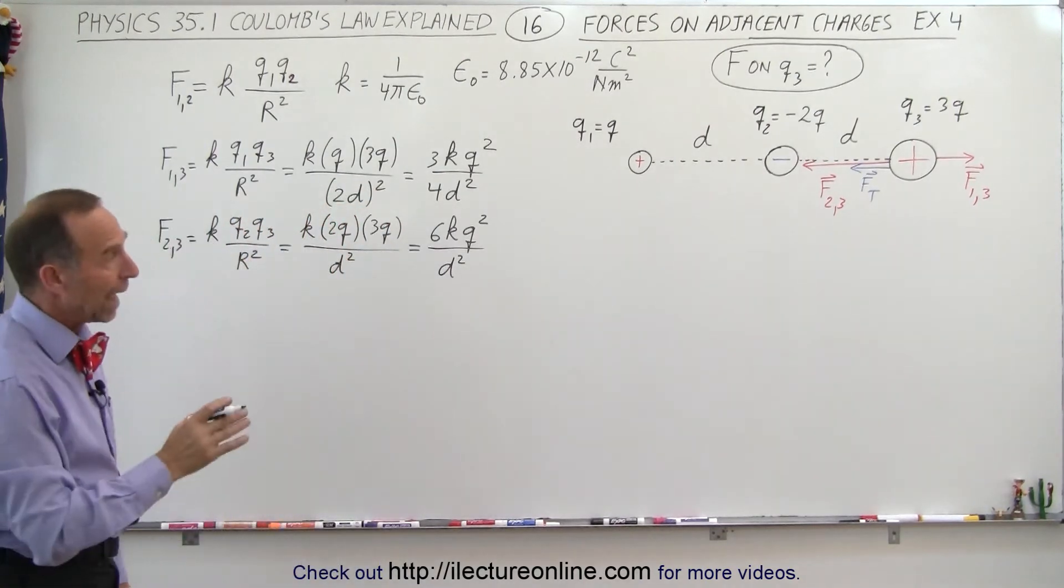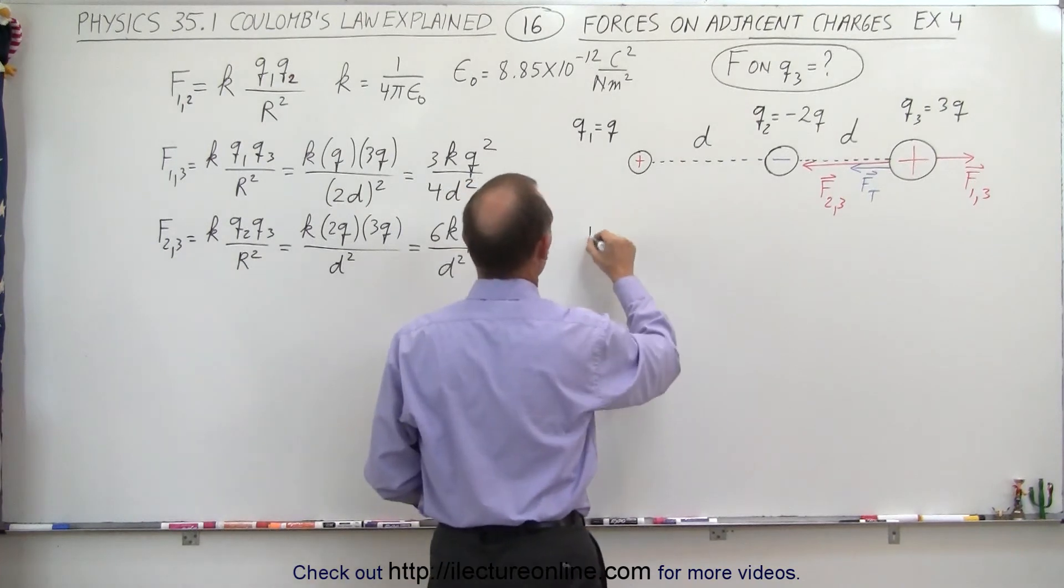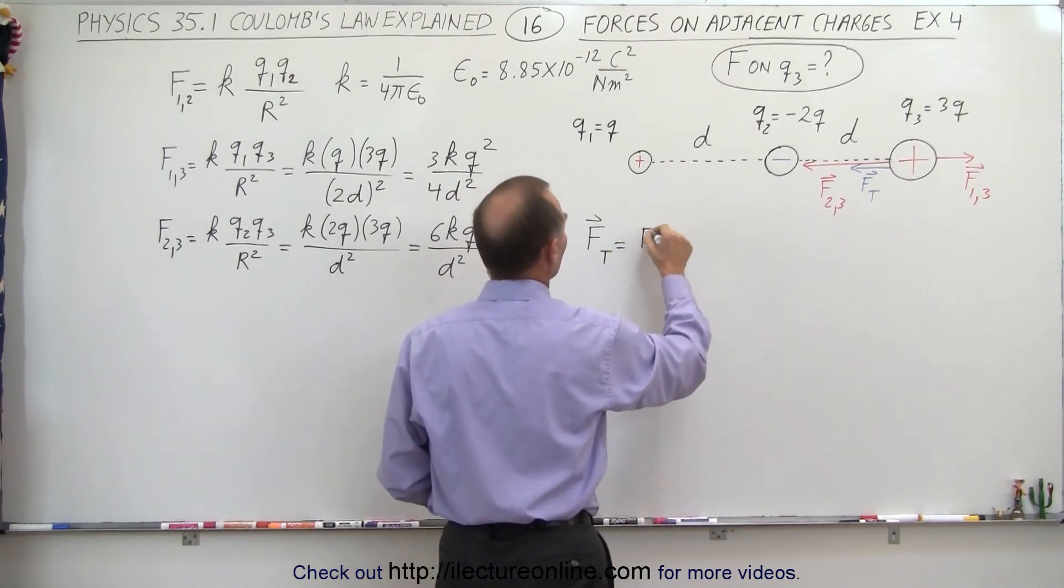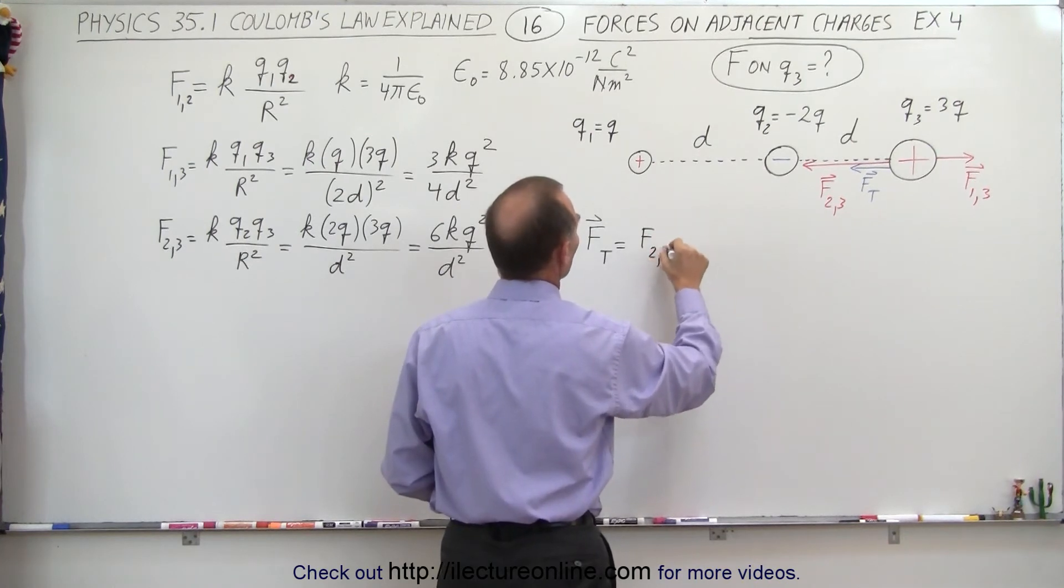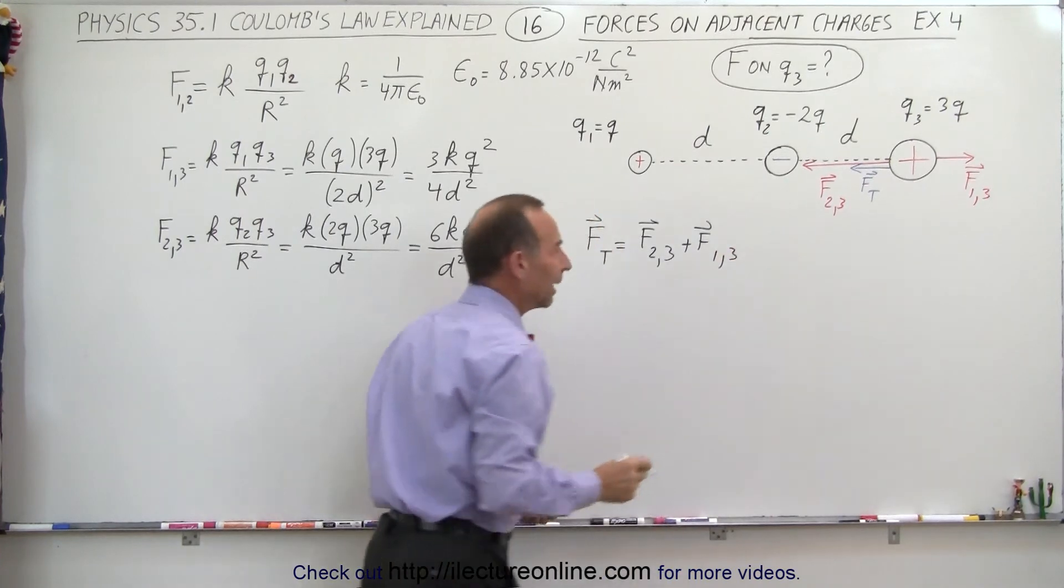Now we're ready to add those two together vectorially. So now we can say that the total force is equal to the sum of the two forces. That will be equal to F2,3 plus F1,3.